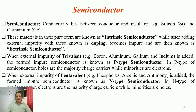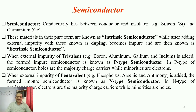If the external impurity is trivalent in nature — examples include boron, aluminium, gallium, indium — the resulting impure semiconductor is known as a P-type semiconductor. In P-type semiconductors, the positive charge carriers, that is holes, are the majority carriers, while electrons are the minority carriers.